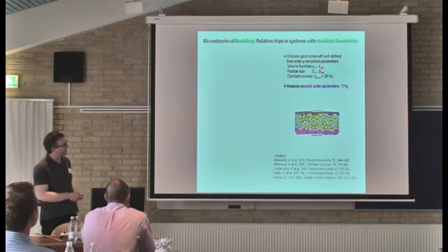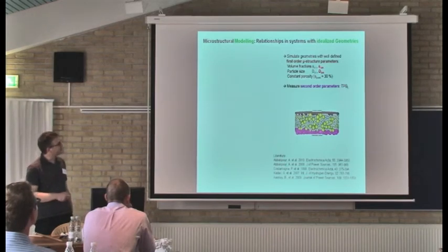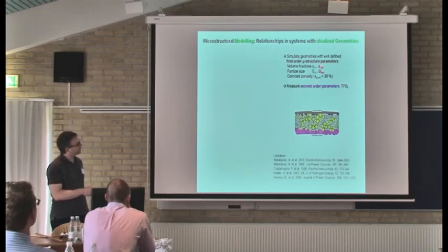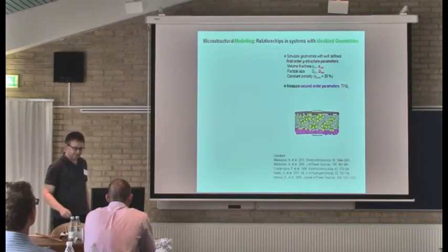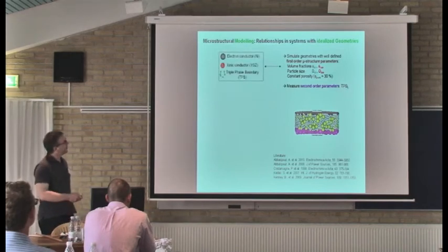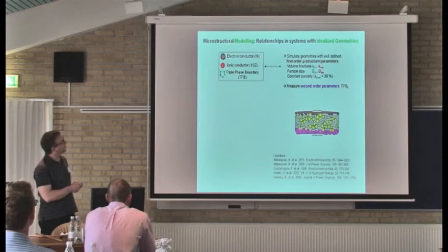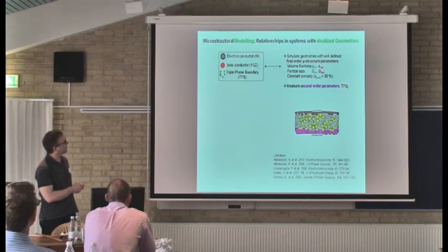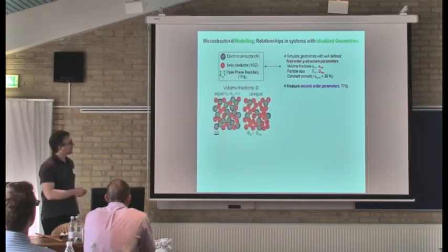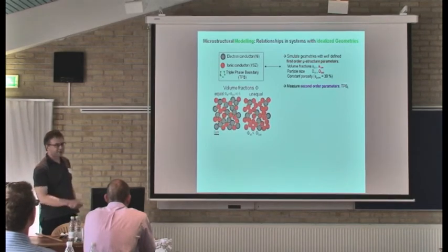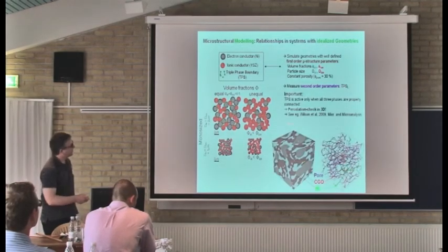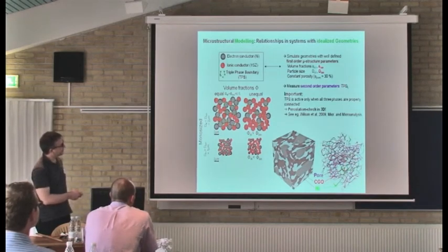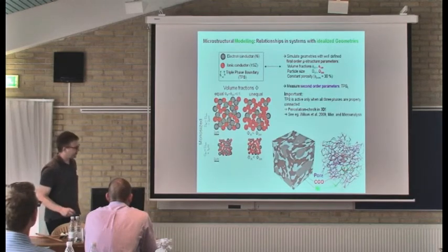In literature you will find many models where synthetic microstructures are produced. Usually they have well-defined first-order structures, and then the second-order parameters are determined analytically. What these models play with is the electronically conducting phase — like nickel — or the ionic conductor, like YSZ. Synthetic microstructures with different volume fractions or different sizes are produced. Importantly, the TPBs that we measure are only active when all three networks are connected.